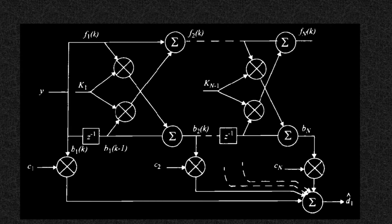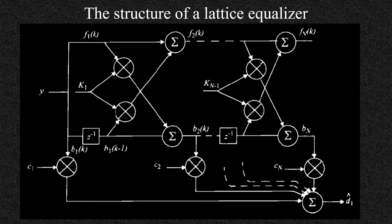This is the lattice equalizer. If you see the structure of the lattice equalizer, Y is the input, and you have F1 of K. A delay is provided, and you combine that with the previous one. So the structure looks like a lattice, and that is why it is called the lattice equalizer.